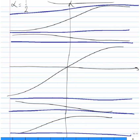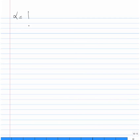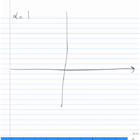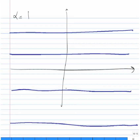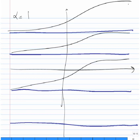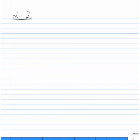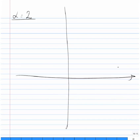For α = 1/2, the constant solutions repeat symmetrically; at y = 0 the solution goes up, then down, up, down. For α = 1, all solutions go upward, with π, -π, 3π, -3π, etc. as the node equilibria. For α = 2, there are no constant solutions and all solutions go up continuously.